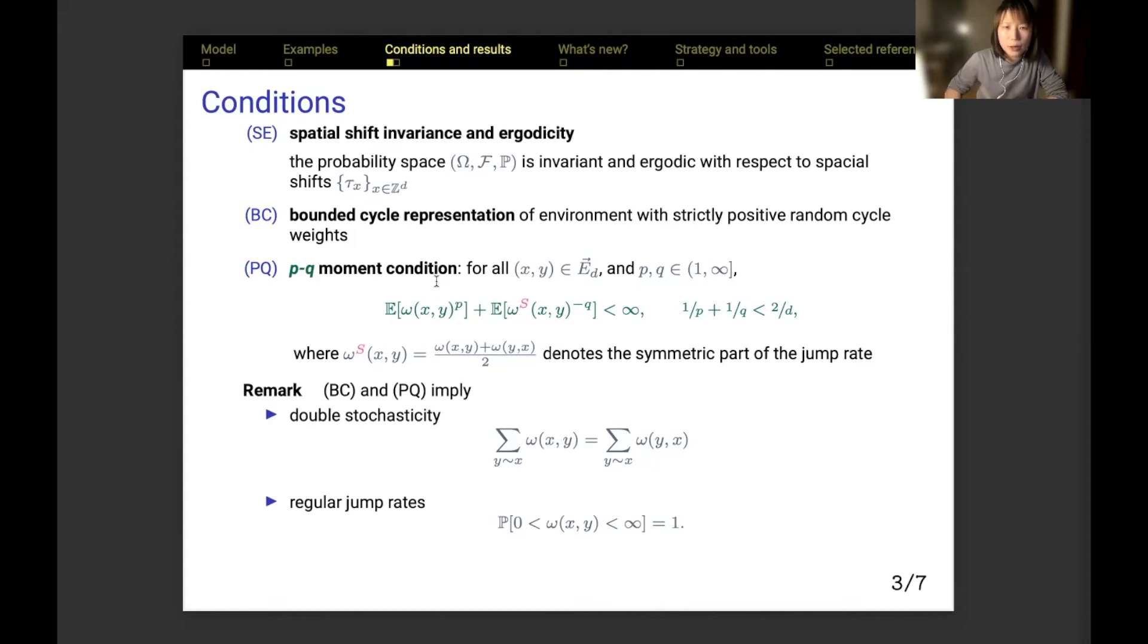Third, p-q moment condition holds for edge jump rates, with p and q being two constants that are greater than 1 and satisfy this inequality. The boundedness on the moment states that the edge rate is not too large, such that its p-th moment explodes, and the two rates on the same bond are not too small, such that the q-th moment of the inverse of the symmetric part, which is taken to be their average, explodes as well.